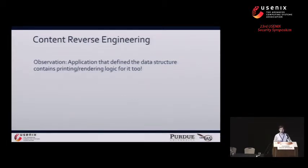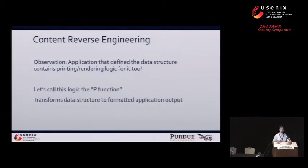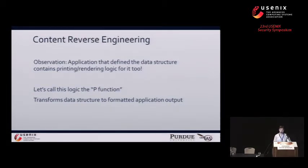We observe that an application which defines a data structure, such as that PDF we just saw, also contains printing or rendering logic for that data structure. Let's call this application logic the P function. The P function should transform that raw in-memory data structure into some human understandable application output.